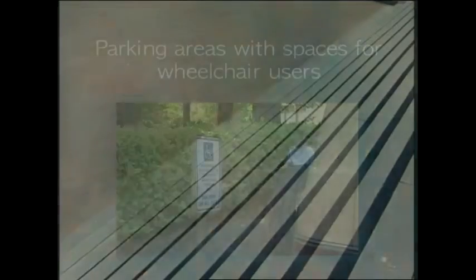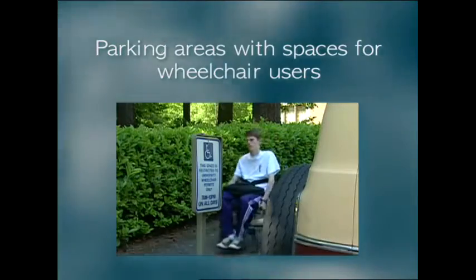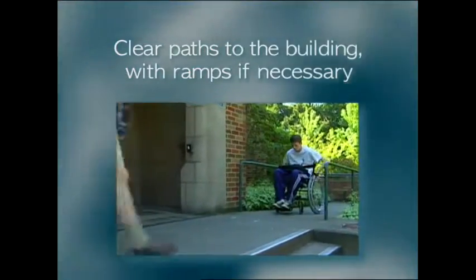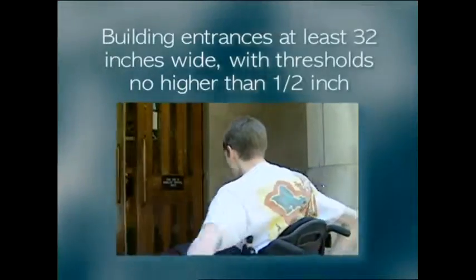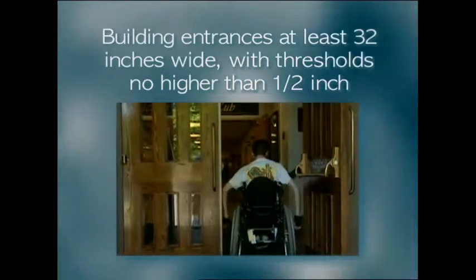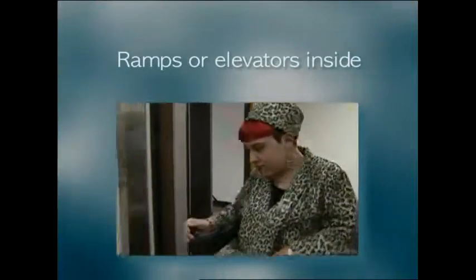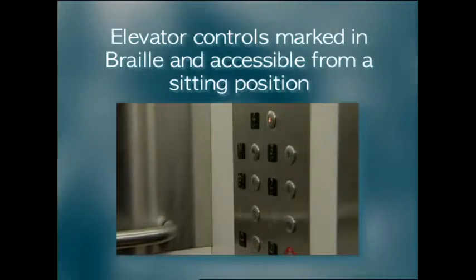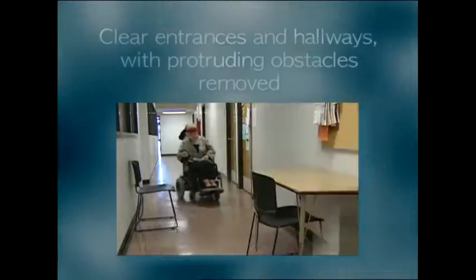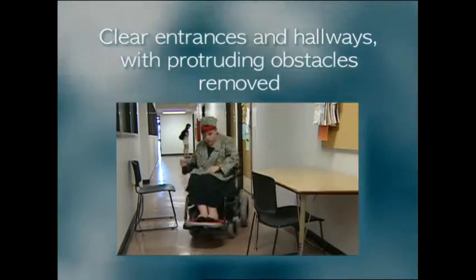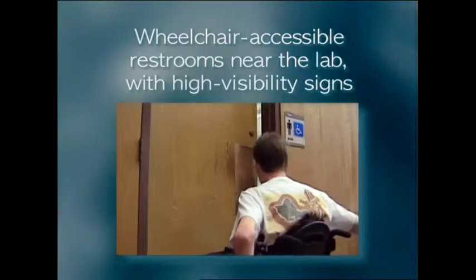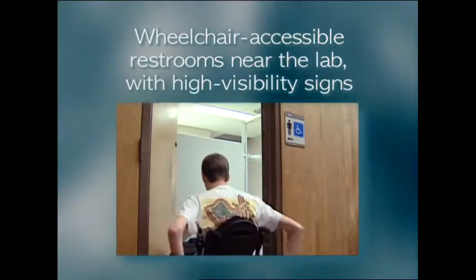Consider these examples: parking areas with spaces for wheelchair users; clear paths to the building, with ramps if necessary; building entrances at least 32 inches wide, with thresholds no higher than one-half inch; ramps or elevators inside; elevator controls marked in braille and accessible from a sitting position; clear entrances and hallways with protruding obstacles removed; and wheelchair accessible restrooms near the lab with high visibility signs.